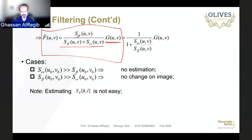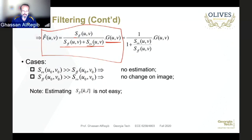It's interesting to look at this in the frequency domain because there are some special cases. The question is: we don't even know what f is — how can we estimate f? We'll look at practical ways to do that in a few minutes. The power spectral density of f and the power spectral density of the noise — the noise estimation can be done by looking at flat areas in the image.